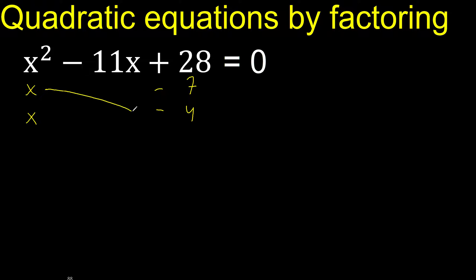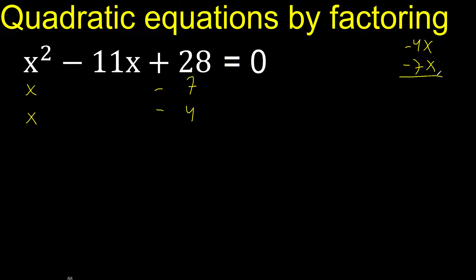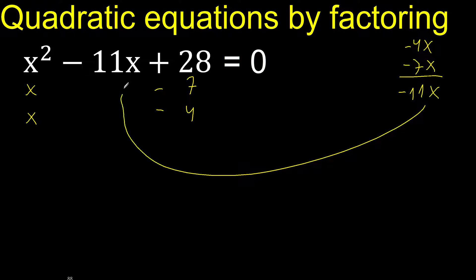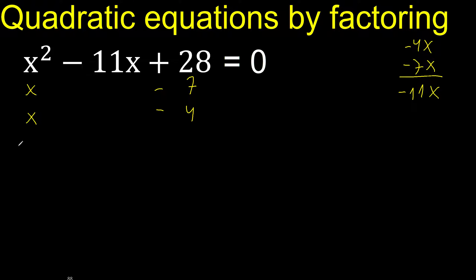Like this: x multiplied by minus 4 here, and x multiplied by minus 7 here, gives minus 11x. Therefore, it is correct.